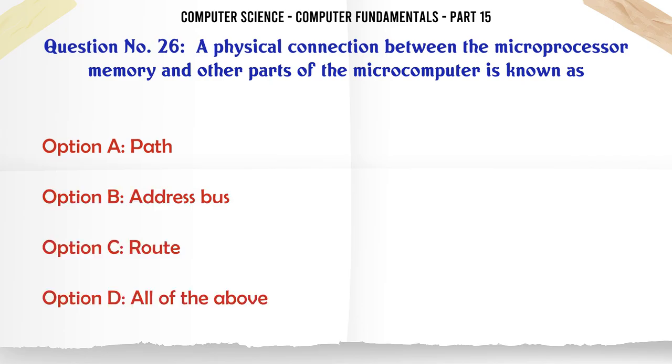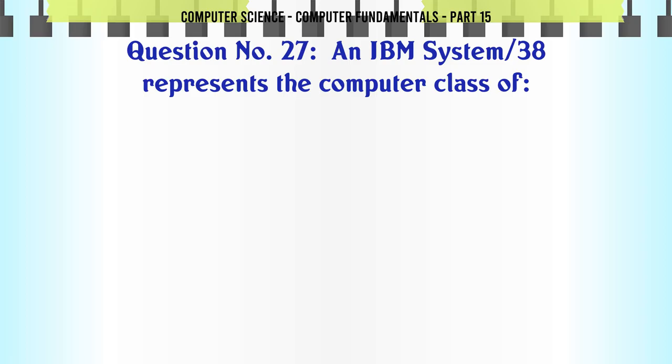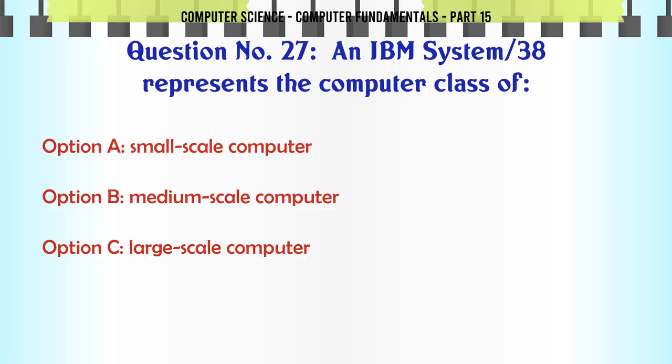A physical connection between the microprocessor memory and other parts of the microcomputer is known as: A. Path B. Address Bus C. Route D. All of the above. The correct answer is Address Bus.